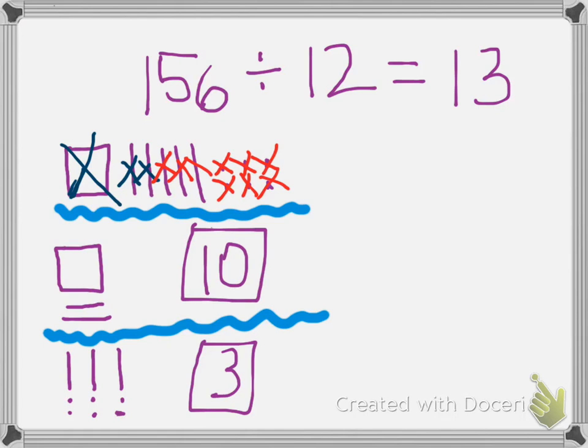So we've just found the quotient for 156 divided by 12—it is thirteen. Here is a creepy smiley face.